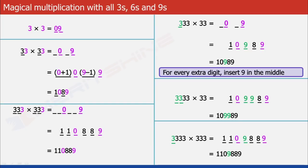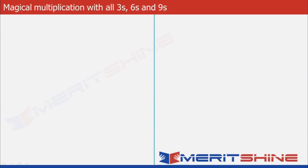So far we have seen that our multiplicand and multiplier were made up of the same digits. Now let us take some examples where they are made up of different digits. Let us begin by a very simple example: 6 × 3, which we all know is 18.